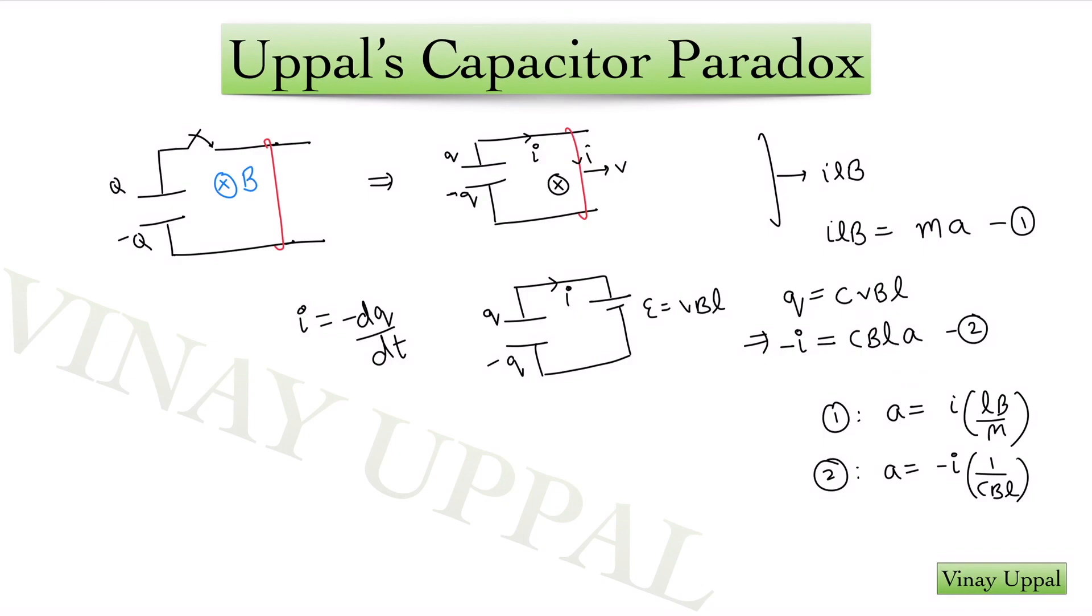And this was the contradiction. The acceleration obtained from equation 1 and obtained from equation 2 were different in magnitude as well as the direction, given by this negative sign in the second equation. So this was the paradox and let's see how we'll resolve it.